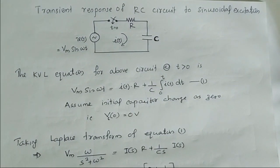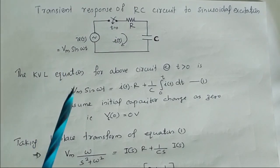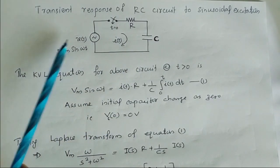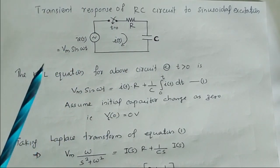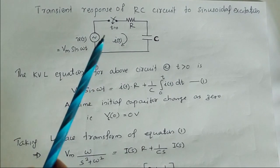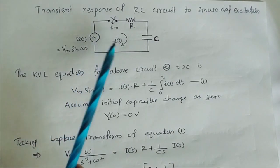In this video we are going to discuss the transient response of an RC circuit to sinusoidal excitation. For that, let's consider this circuit, which is energized by a voltage V(t) = Vm·sin(ωt). At t = 0, the switch is closed so that current I(t) will flow through the circuit.